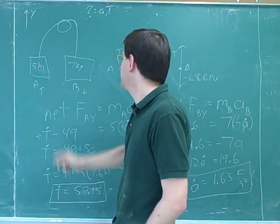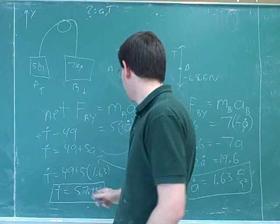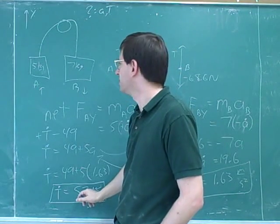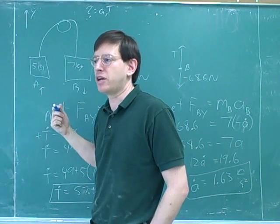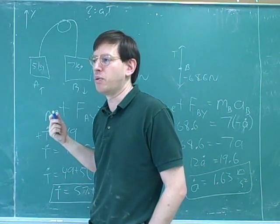Well, that might seem tempting, but that didn't turn out to be right. This has a weight of 49 Newtons, but the rope is not pulling with 49 Newtons. It's pulling with 57 Newtons. So you can't assume that the rope is going to transmit the weight.